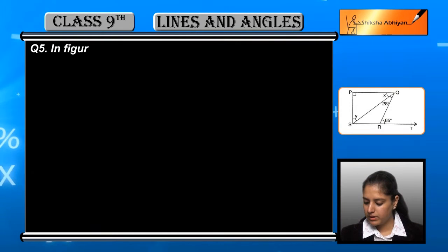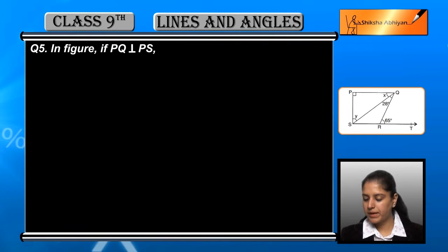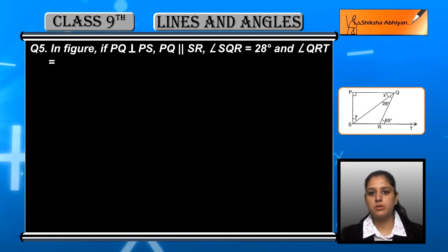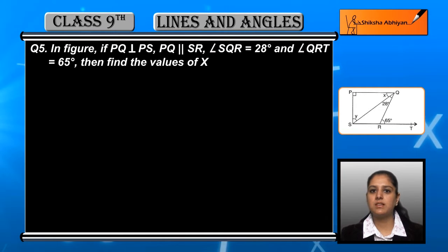Question number 5. In figure, if PQ is perpendicular to PS, PQ is parallel to SR, and angle SQR is equal to 28 degrees, QRT is equal to 65 degrees, you have to find X and Y.